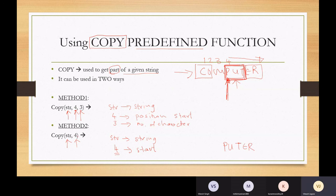So copy STR comma four will give you PUTER. But copy STR four comma three will give me PUT. So if you understand how to use both versions of copy, depending on the situation that you are in, you can then determine which version to make use of.